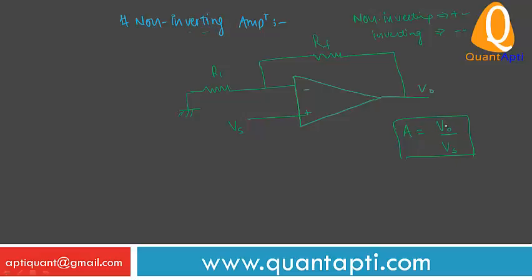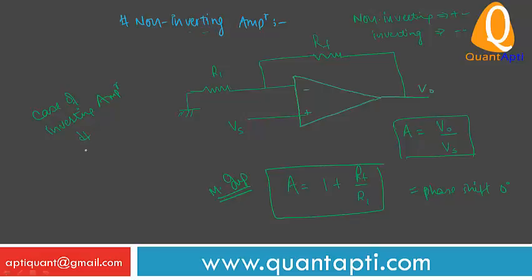Now if there is a phase shift of 0 degree, then we can say that gain is 1 plus Rf upon R1. That is most important, phase shift is 0 degree. So in case of non-inverting amplifier, the gain A is defined by 1 plus Rf upon R1, where phase shift is 0 degree. But in case of inverting amplifier, gain is defined by A equals minus Rf upon R1.